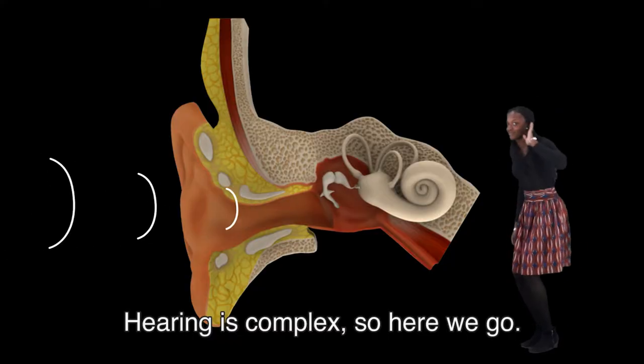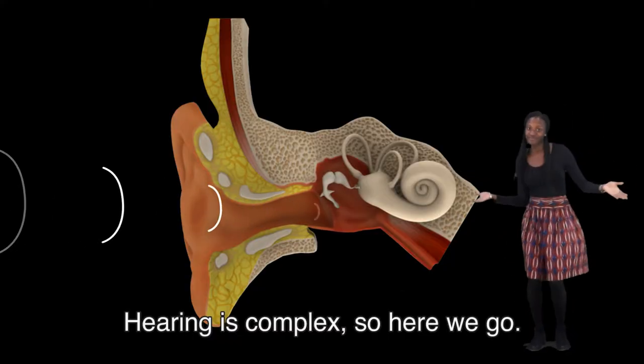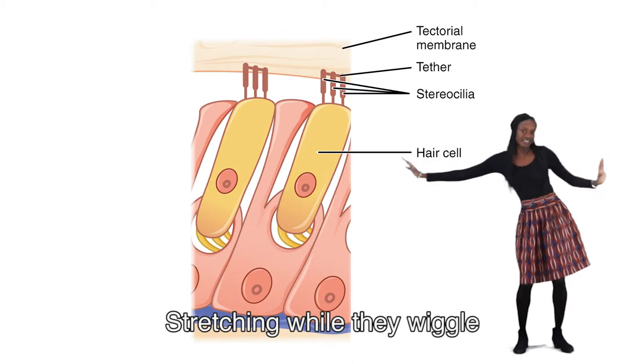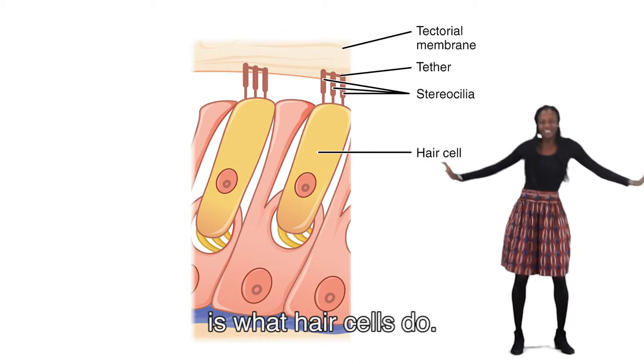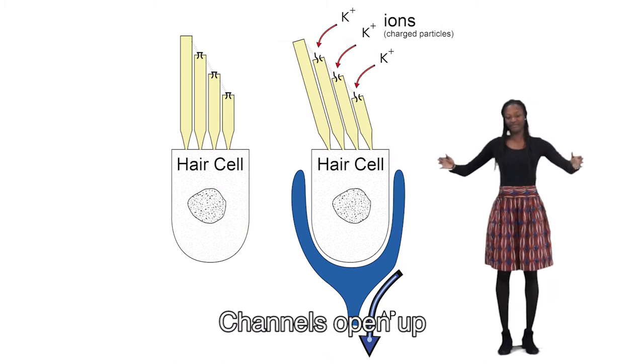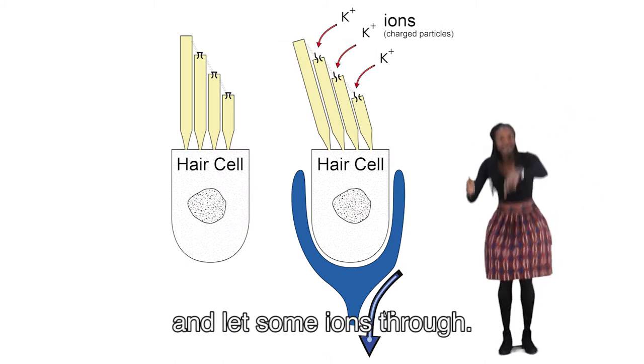Hearing is complex, so here we go. Hair cell channels do something that you should know. Stretching while they wiggle is what hair cells do. Channels open up and let some ions through.